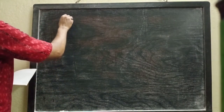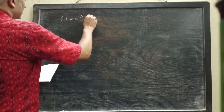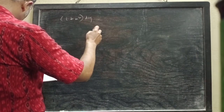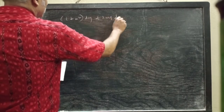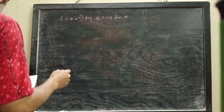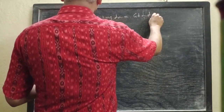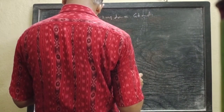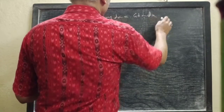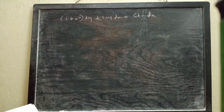Now we have the problem: (1 + x²) dy + 2xy dx = 4x dx. We have (1 + x²) dy + 2xy dx equal to 4x dx.